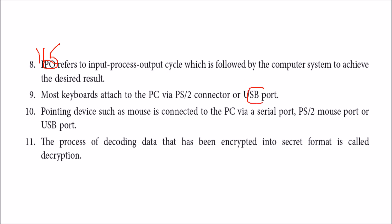Most keyboards are now attached via USB port, whereas previously they used PS2. Pointing devices such as a mouse are connected through serial port, PS2, mouse port, or USB port. If you want to hide your data during transmission, the process of encoding and decoding is called encryption and decryption. This was all about Chapter 1: Computer and Its Components. We will take up the next chapters in the next session. Thank you so much.